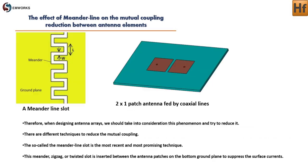Therefore, when designing antenna arrays, we should take into consideration this phenomenon and try to reduce it. There are different techniques to reduce the mutual coupling. The so-called meander line slot is the most recent and most promising technique.